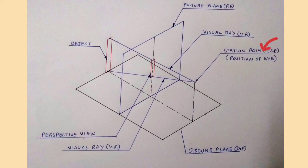Station point is the position of the observer's eye from where the object is viewed. Picture plane is the transparent vertical plane positioned normally between the station point and the object to be viewed.